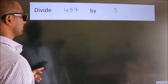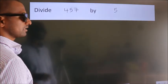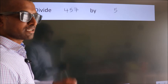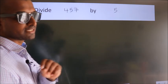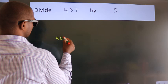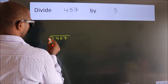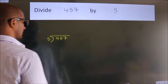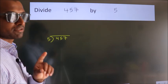Divide 457 by 5. To do this division, we should frame it in this way: 457 here, 5 here. This is your step 1.